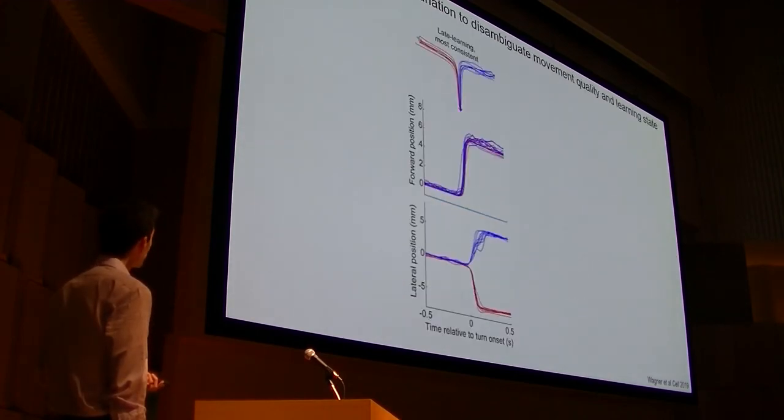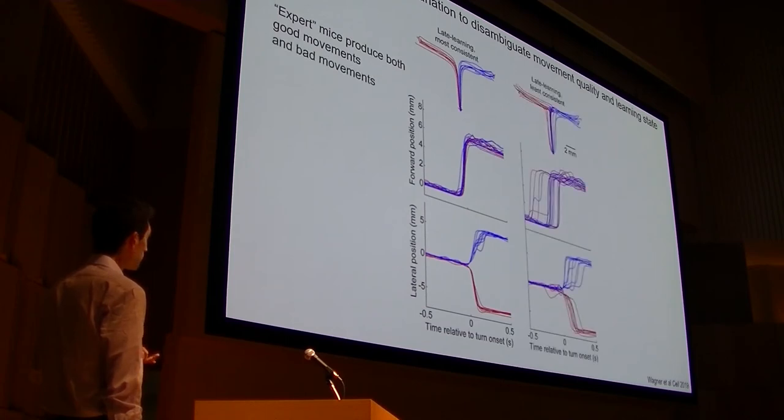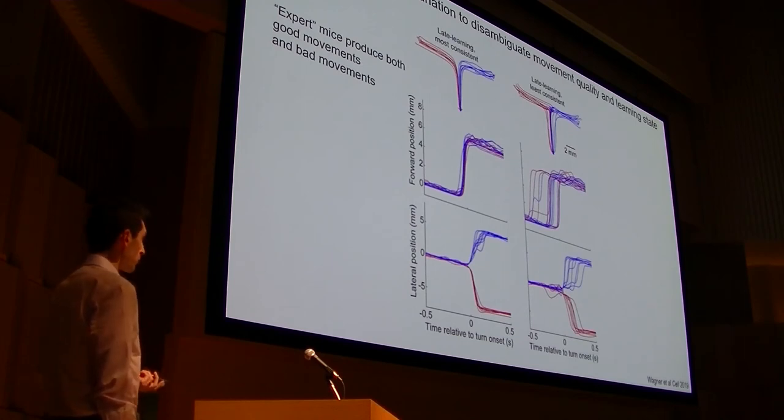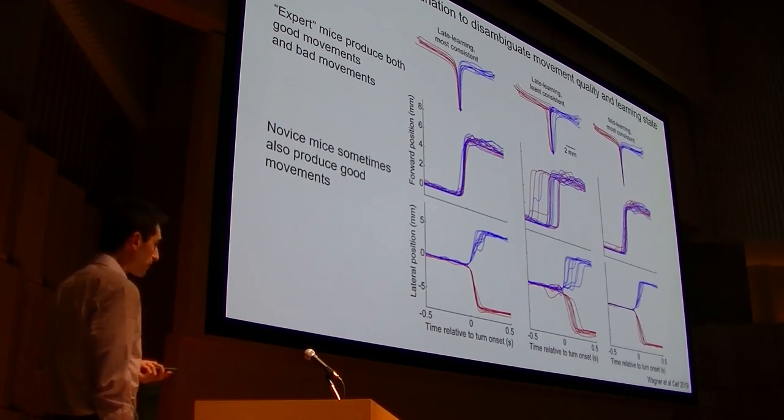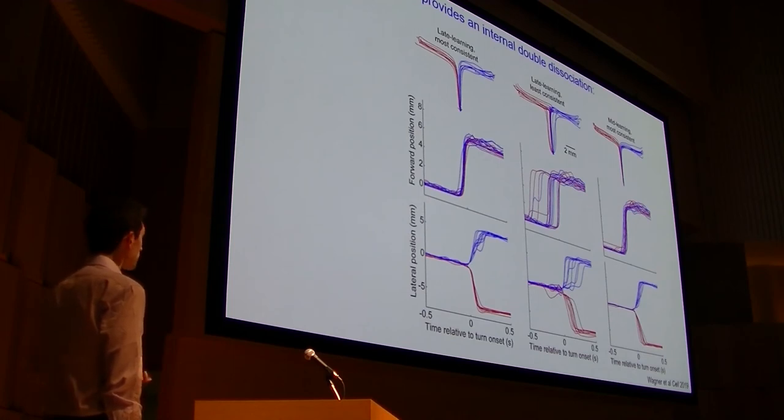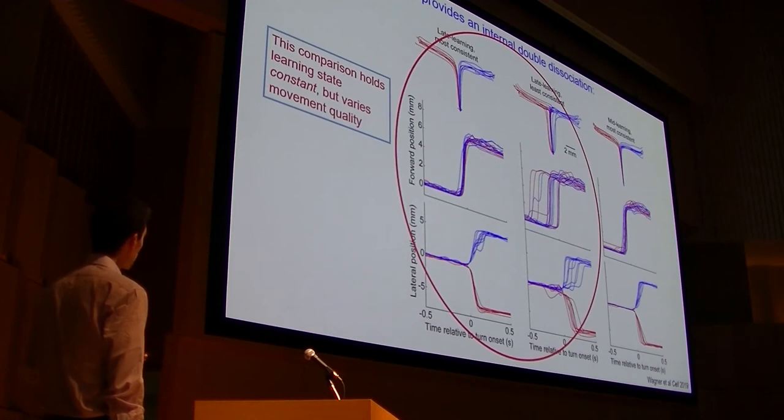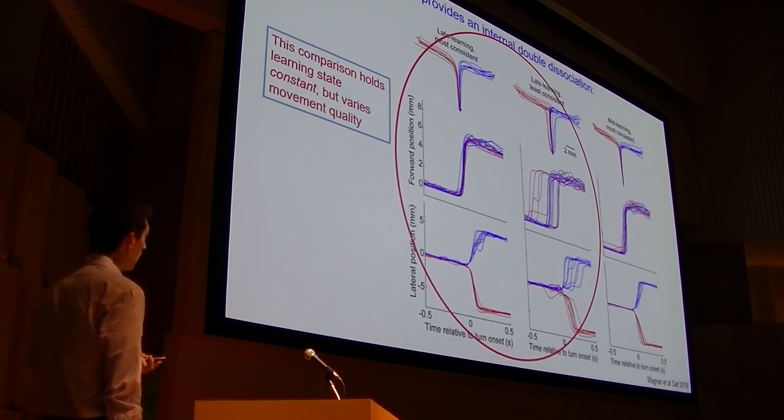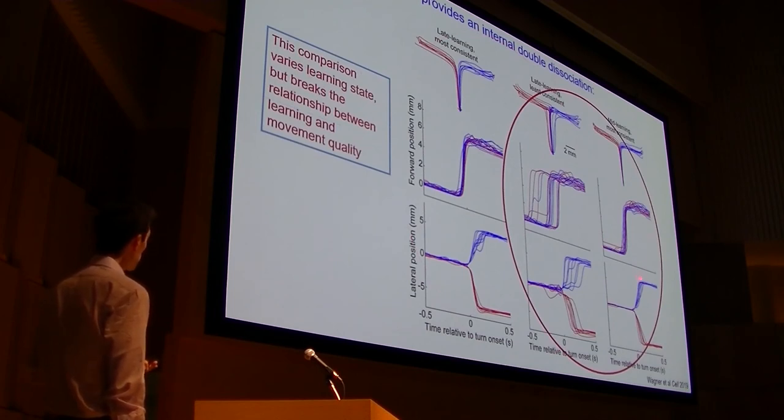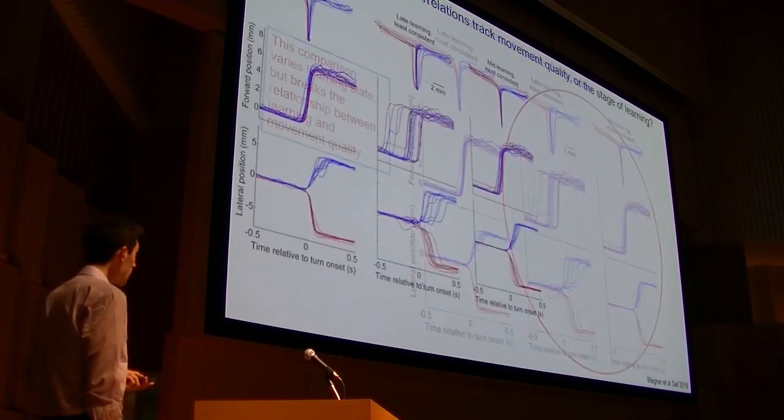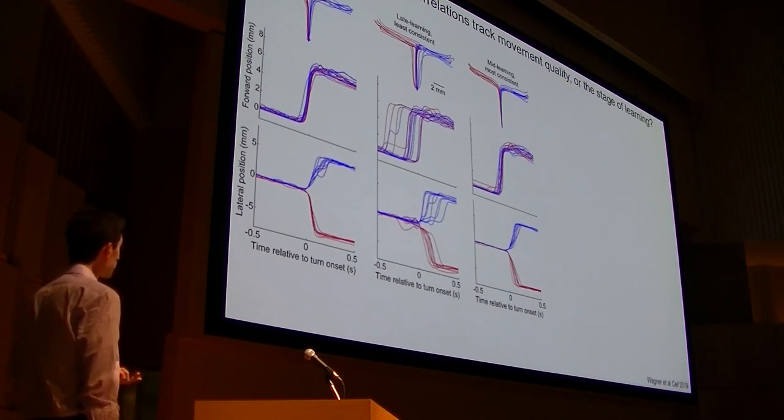So how do you test that? Noisy mouse behavior to the rescue. Expert mice produce good movements, of course, but they also produce plenty of bad movements, really ugly-looking ones like this. And conversely, if you look earlier in learning, it's of course true that in general performance is worse, but sometimes they're still producing nice clean movements, right? So this gives you this sort of coveted, you know, internal double dissociation, right? If I compare these two groups of trials, what I'm doing is holding learning state constant because these two groups of trials are drawn from the same imaging session, but I'm varying the movement quality between these two groups of trials. Alternatively, if I compare these two groups of trials, what I'm doing is varying the learning state, so late versus mid-learning, but I've broken this relationship between learning and movement quality because the late-learning trials are crummier than the mid-learning trials.